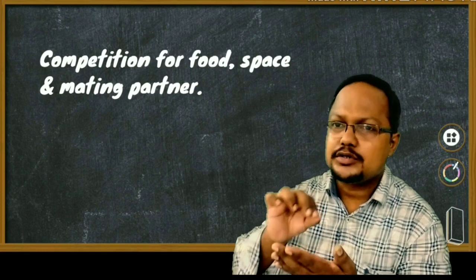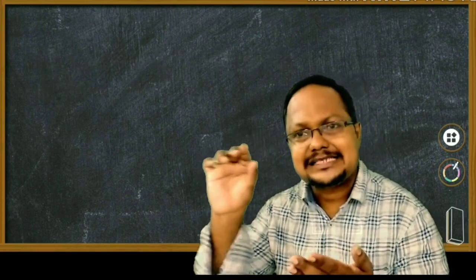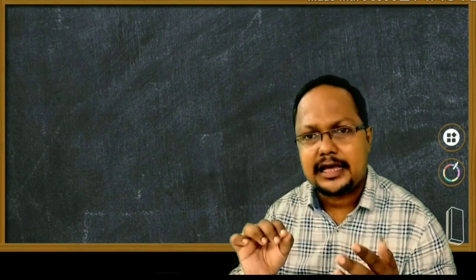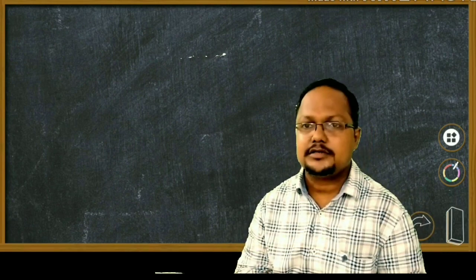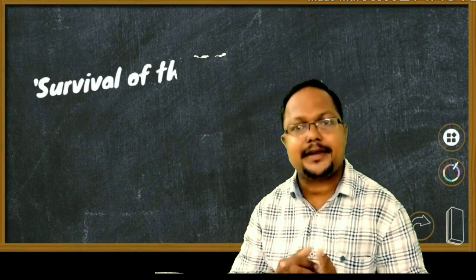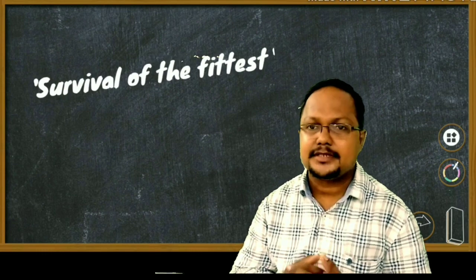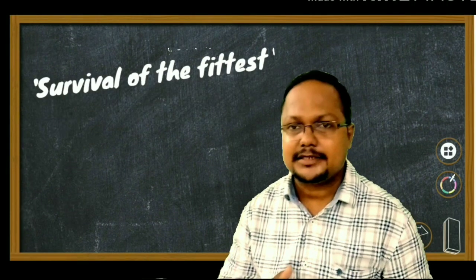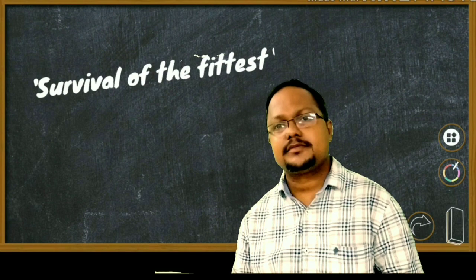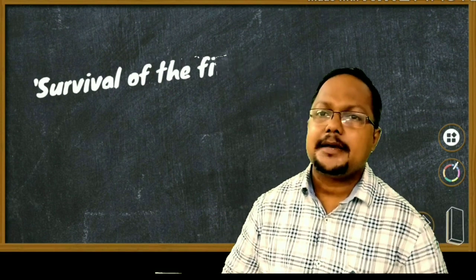This is natural selection, or sometimes called survival of the fittest, and it is the cornerstone of the theory of evolution. Natural selection is the process by which those individuals with characters or genes or traits better suited or adapted to the environment live long enough to reproduce many offspring.